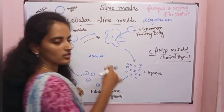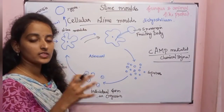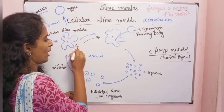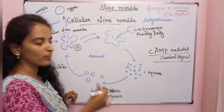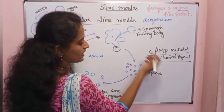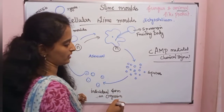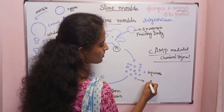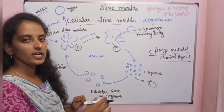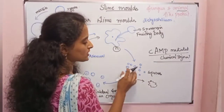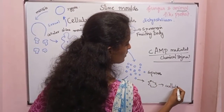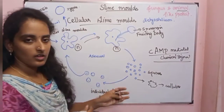The sporangia in cellular slime molds is haploid and undergoes mitotic division to produce spores. Spores have a cell wall that protects the DNA of the nucleus under adverse conditions.